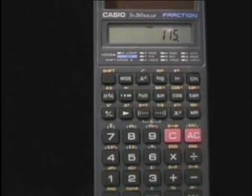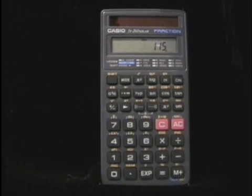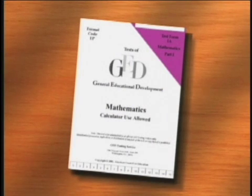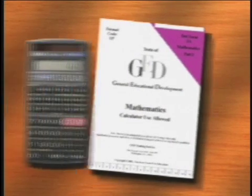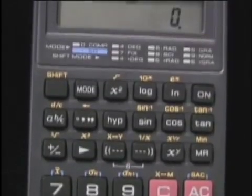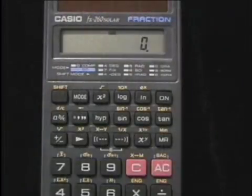You are permitted to use a calculator to help you answer some of the questions on the GED mathematics test. The purpose of this video is to give you an opportunity to become familiar with this calculator before you take the test. The GED mathematics test is in two booklets with 25 questions in each. You're allowed to use a calculator only in booklet or part number one. You may not need a calculator for every question in part one, but the calculator will be available for those questions where it would be helpful to you. You may use only the calculator provided at the beginning of the test by the GED examiner. The calculator you see in this video is the same calculator you'll use when you take the mathematics test.